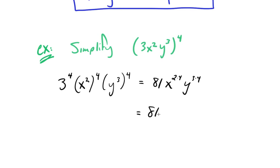To finish things up, we just have to do this multiplication. This will be 81 times x to the 2 times 4, that'll be x to the 8th, times y to the 3 times 4, that'll be y to the 12th. So here's our final answer.